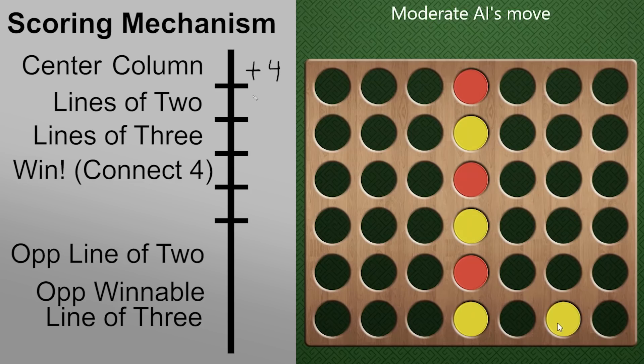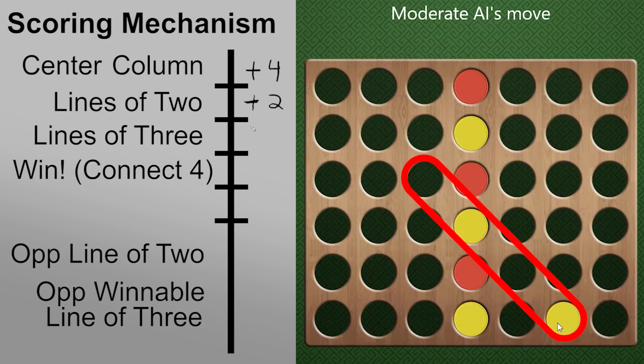Next, lines of two. I'm going to give this a plus two. And note that this means you get plus two for each direction of the line of two. So in this one, we'd have a left, a right, and then a diagonal direction, as you can see, for a total of six points on that drop.